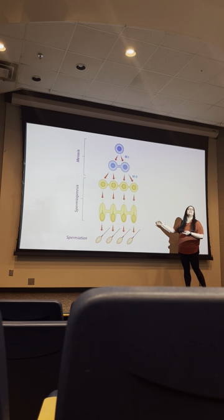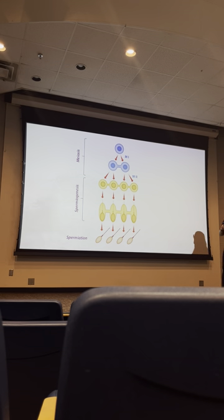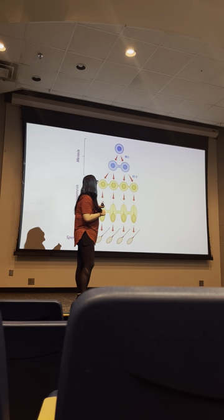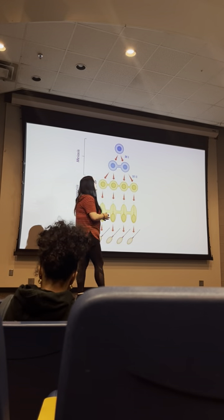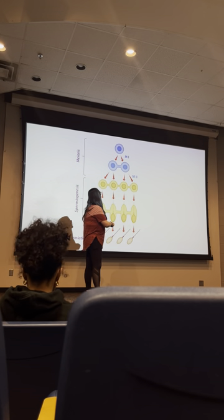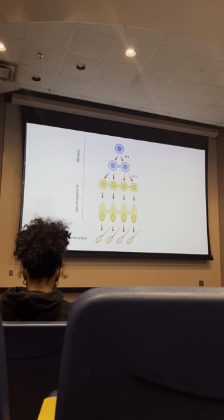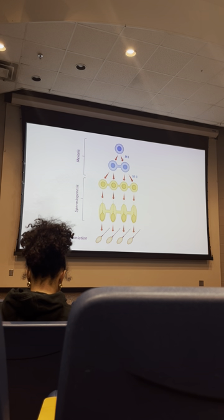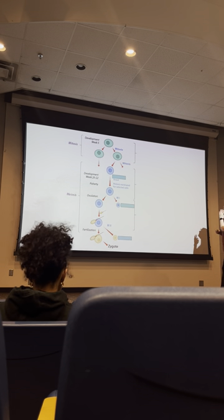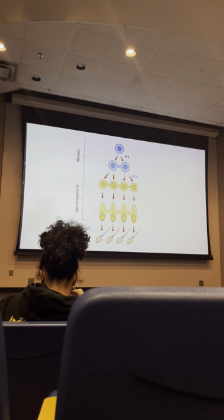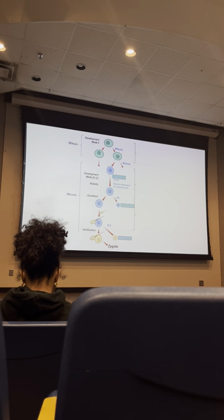Applying the male version: spermatogonia is our stem cell, giving us primary spermatocyte, then secondary spermatocyte, then spermatids. The stem cell is diploid, but once it commits to meiosis everything turns haploid. Primary spermatocytes are haploid. The mature gamete — the final form after the spermatid — is called spermatozoa.